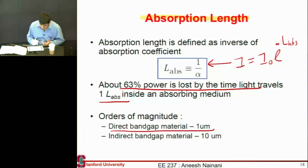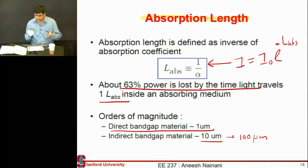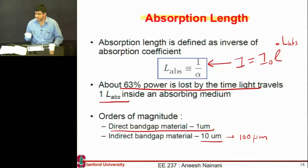If you're using an indirect band gap material, the absorption length is typically between 10 to 100 microns, so you need a large length of material. Your material cost associated with your cell invariably has to be high.